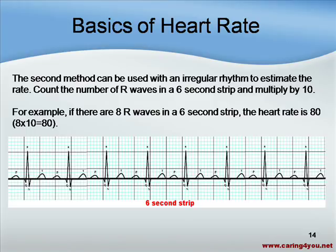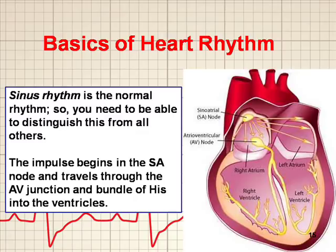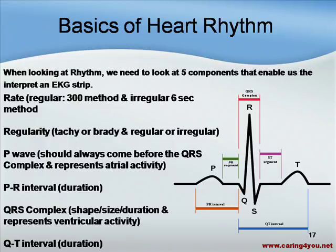Now let's talk about the basics of heart rhythm. Sinus rhythm is the normal rhythm, so you need to be able to distinguish this from all others. The impulse begins in the SA node and travels through the AV junction and the bundle of His into the ventricles — this is sinus rhythm. When looking at rhythm, we need to look at five components. We need to look at the rate: if it's regular, we use the 300 method; if it's irregular, we use the 6-second method.